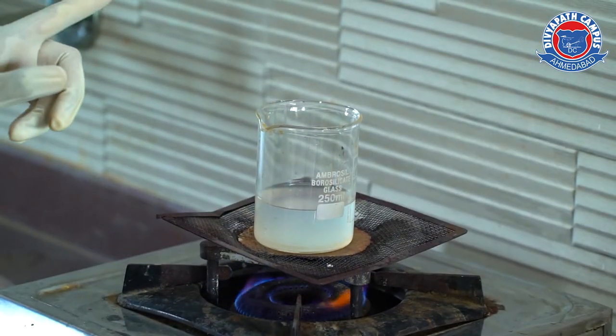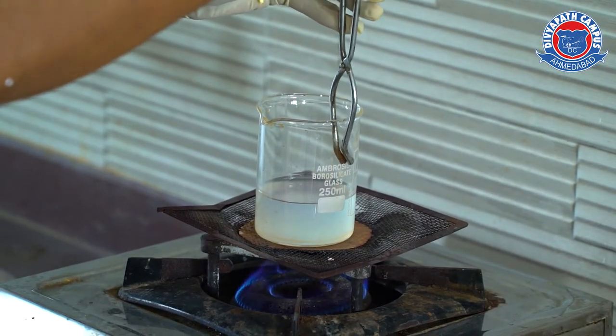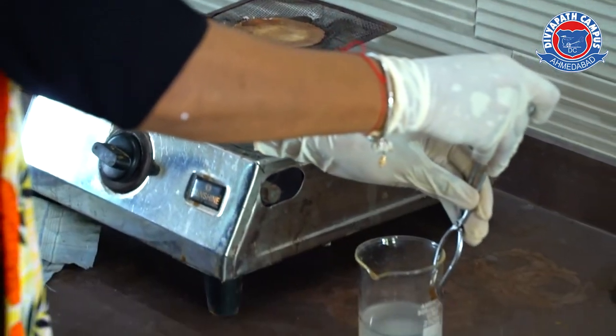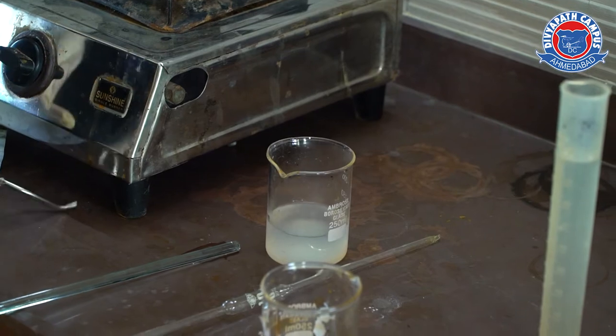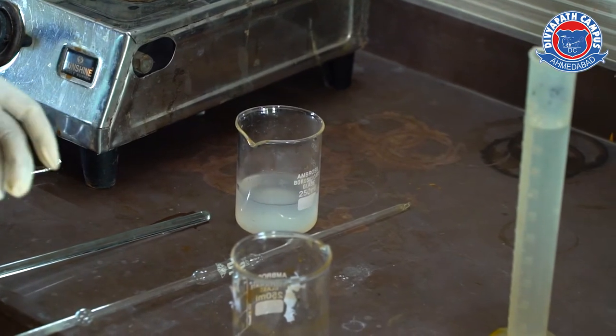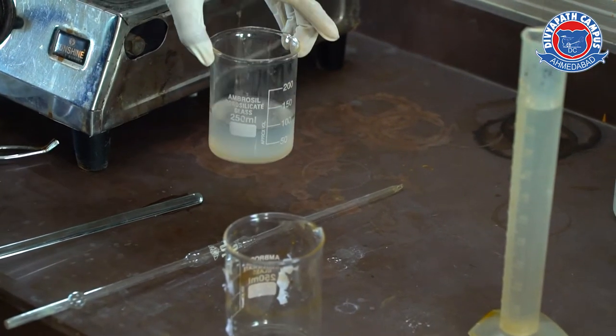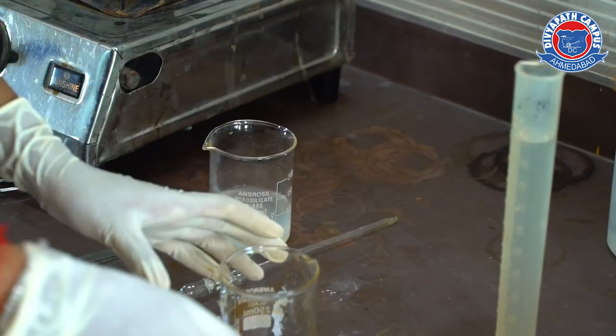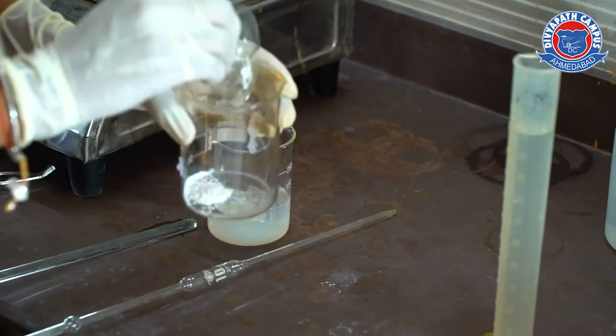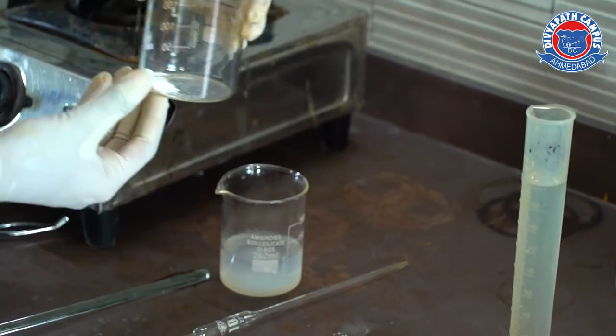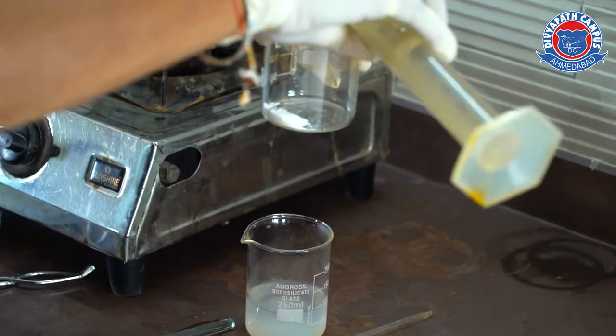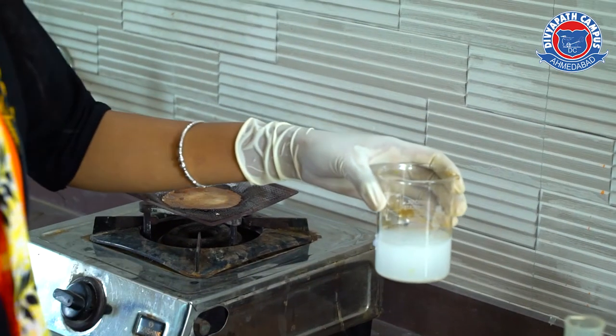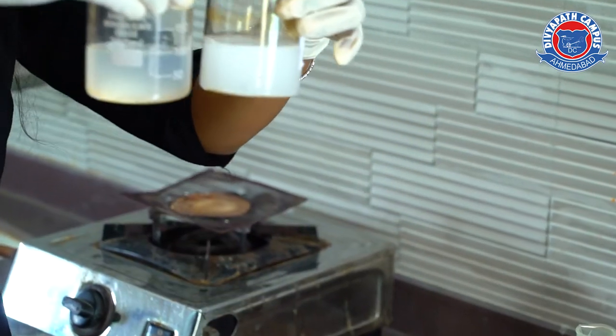Now, 10 minutes is finished. So, our sol is being ready. We will slowly remove it from the gas. And if you want to see the original starch sol, then you can compare it with your 0.5 gram starch powder and simple distilled water. You can see the difference.